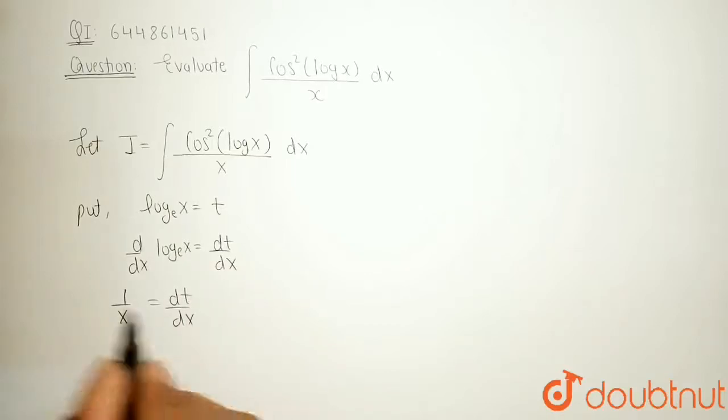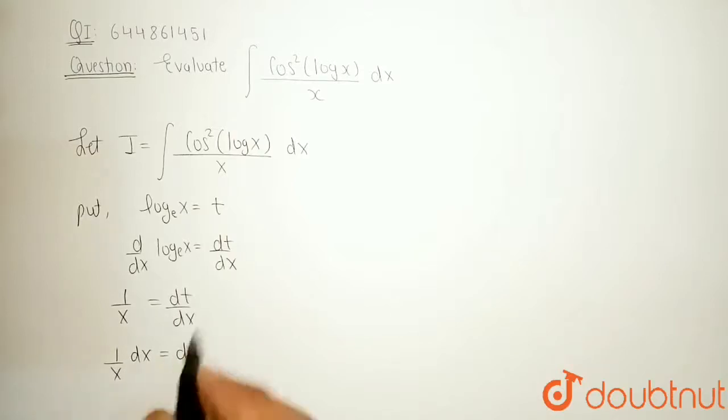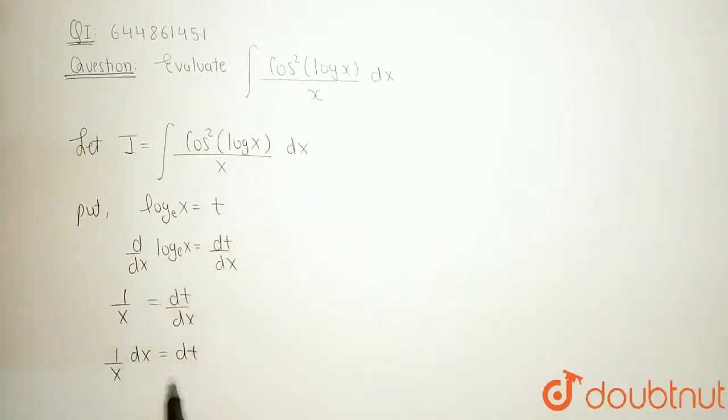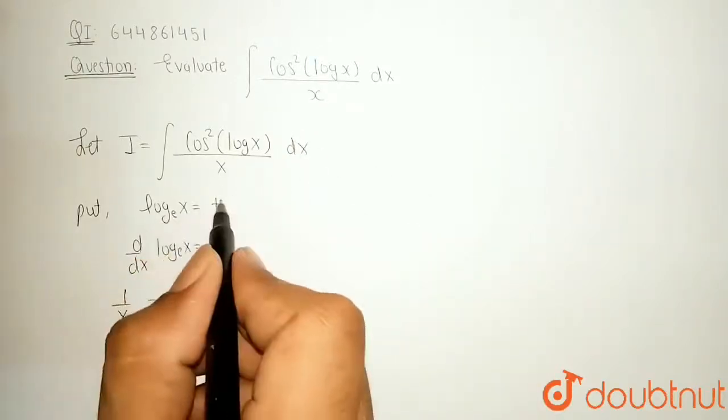I can shift this dx towards the numerator of LHS. So, it become 1 upon x into dx is equal to dt. So, I can replace this dx upon x by dt and this log of x by t.